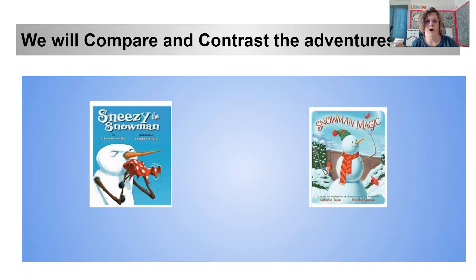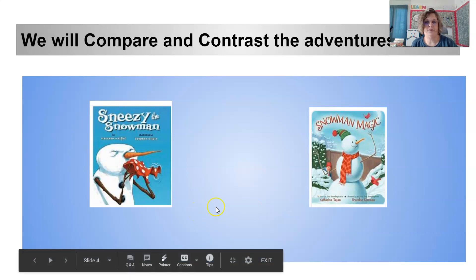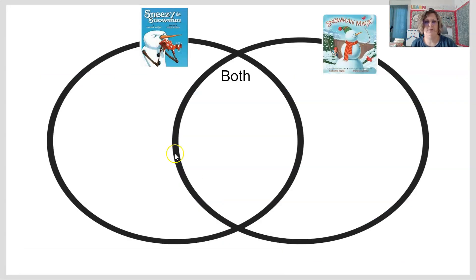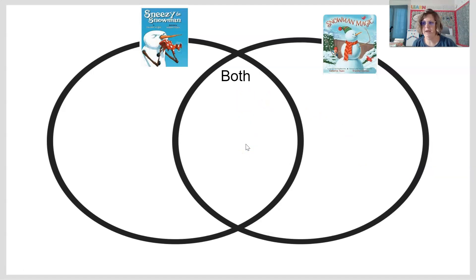Our books are Sneezy the Snowman and Snowman Magic, and then we have our Venn diagram. Over here you'll put things that were only in Sneezy the Snowman. Over here you'll put only things that were in Snowman Magic. And then in the middle you'll put things that were the same.